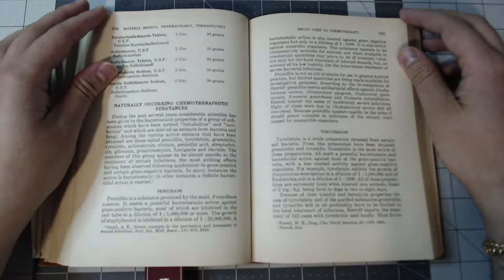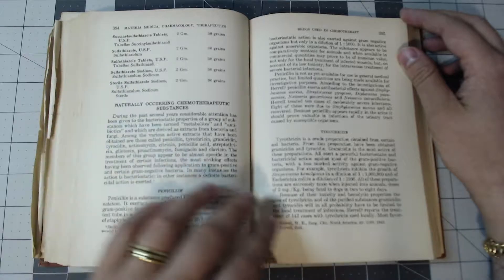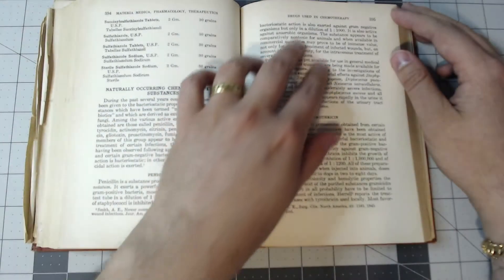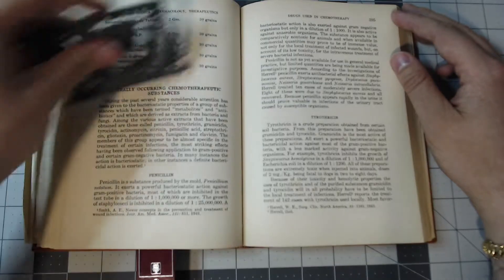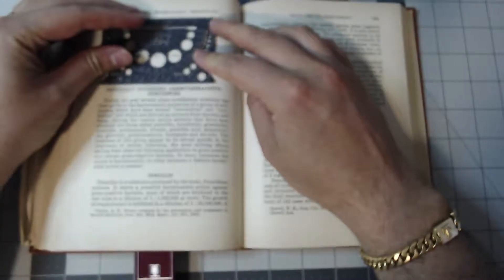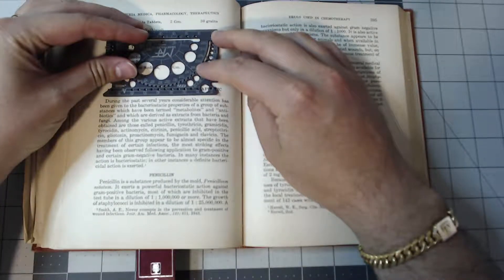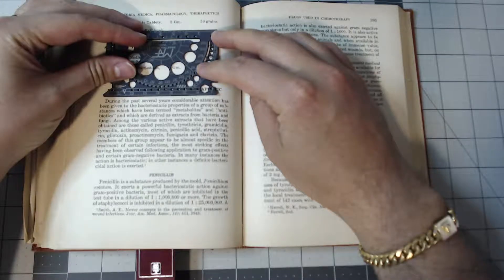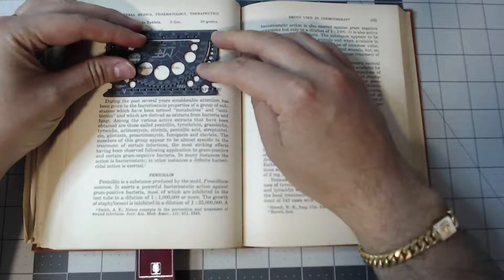So again, this book was published back in 1945, and it's interesting because I like this one section here, penicillin. This is actually a chapter on drugs used in chemotherapy, and they talk about naturally occurring chemotherapeutic substances. During the past several years, considerable attention has been given to the bacteriostatic properties of a group of substances termed metabolites and antibiotics which are derived as extracts from bacteria and fungi.